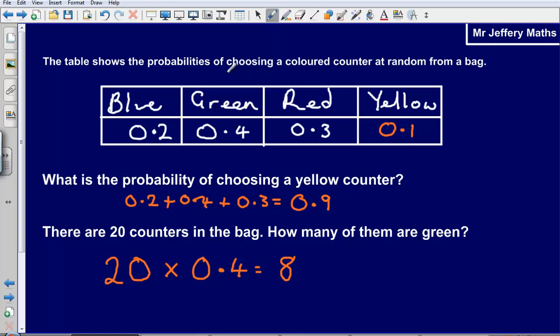So there would be 8 green ones and we can check this by doing the rest of these. 20 times 0.2 that's going to give us 4. 20 multiplied by 0.3 that's going to give us 6. And 20 multiplied by 0.1 that's going to give us 2. These should add up to 20. So 4 plus 8 is 12 plus the 6 is 18. Add on the 2 gives us 20. So as we can see that does work.